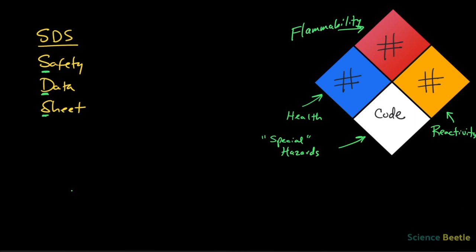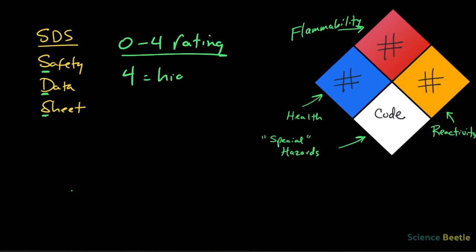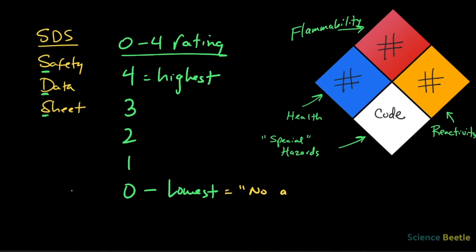The rating system for flammability, health, and reactivity is a code of zero to four. The highest rating is four, and the ratings go down: three, two, one, and zero — zero being the lowest. A rating of zero essentially says there is no serious hazard and, in the case of reactivity, the material is very stable. A level four is the highest — it can be either lethal or very dangerous, resulting in very serious, life-threatening injury.